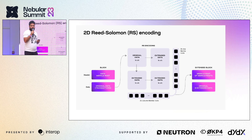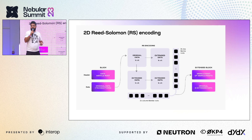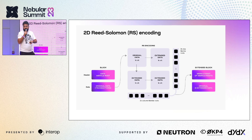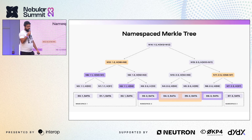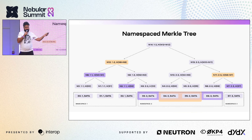Looking at the erasure coding: you take the original block data — all the transactions in the block — and you arrange them in a square, chunking the data into equally sized chunks. Then you extend the data using erasure coding. What you Merkelize is not just the original data like in Tendermint usually, but the whole extended data — the whole square — doing it once for every row and every column. So we had to swap out the data root in the Tendermint header.